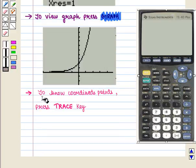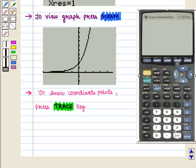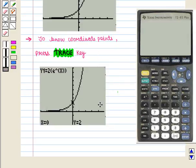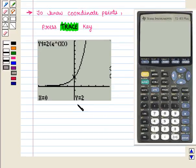Now, to know coordinate points on the graph, we press the TRACE key. And we get the following display on the screen. Here we see that this point on the graph shows x equals 0 and y equals 2. To know other points on the graph,